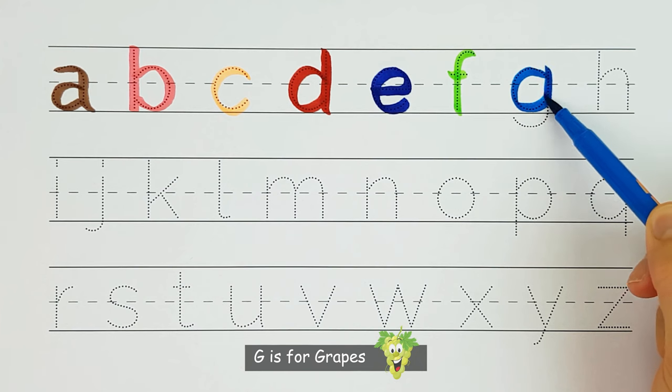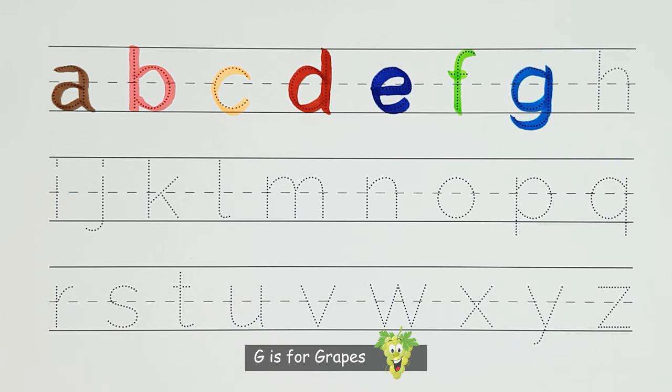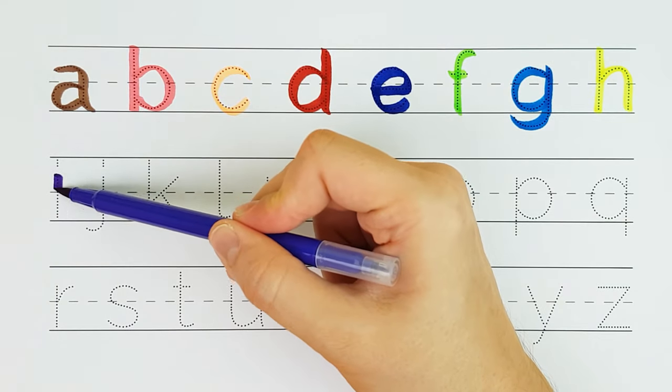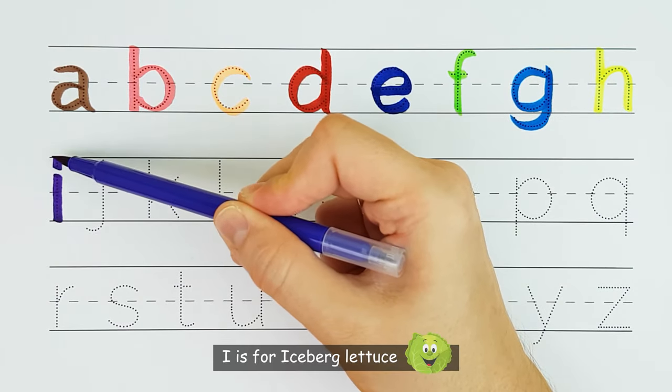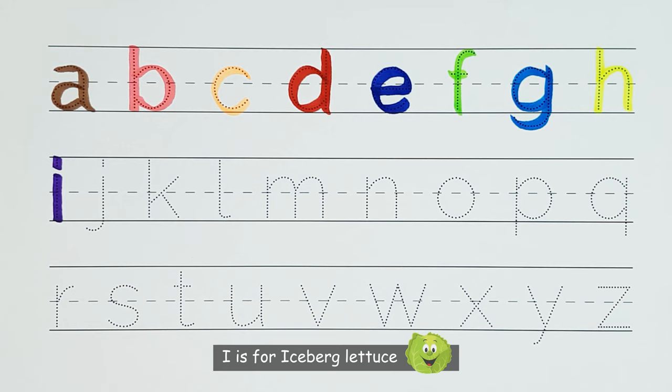G. G is for grapes. G. H. H is for hot chili. H. I. I is for iceberg lettuce. I.